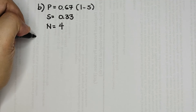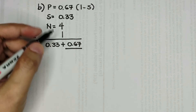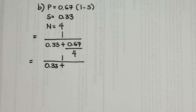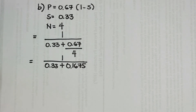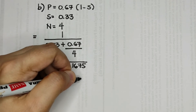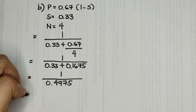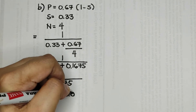Again, using the formula for Amdahl's Law: speed up equals 1 over 0.33 plus 0.67 divided by 4. Now 0.67 divided by 4 equals 0.1675, so 0.33 plus 0.1675 gives us 0.4975. Then 1 divided by 0.4975 gives a maximum speed up of 2.10 times.